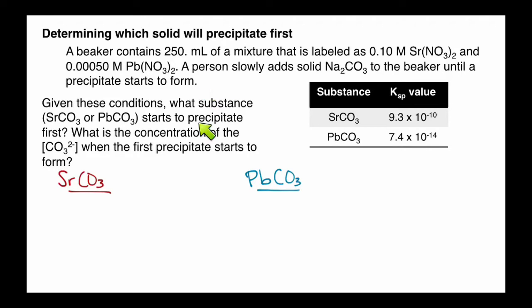If we look at both of the options, the strontium carbonate or lead carbonate, both are mildly soluble but mostly insoluble. We see their Ksp values over here. For strontium carbonate, it's 9.3 times 10 to the negative 10th. For lead carbonate, it's 7.4 times 10 to the negative 14th.